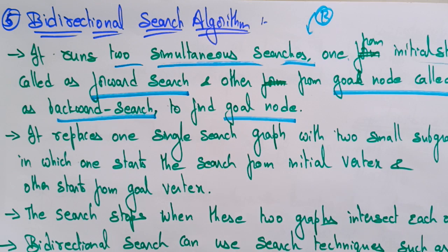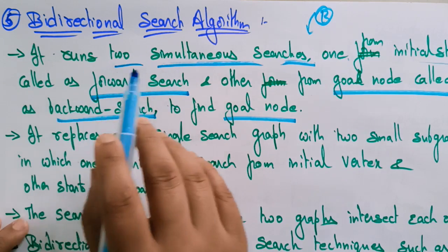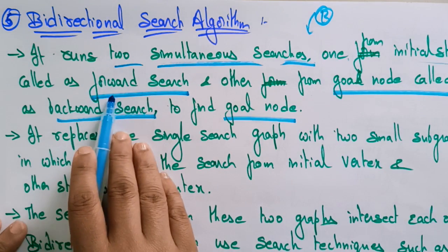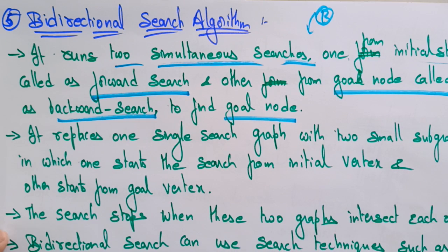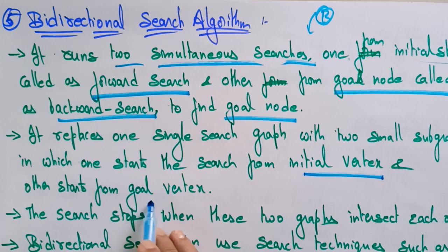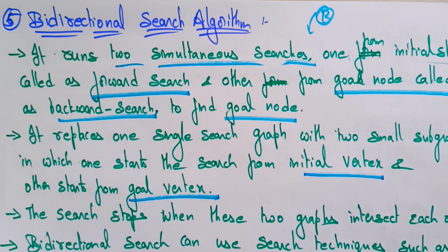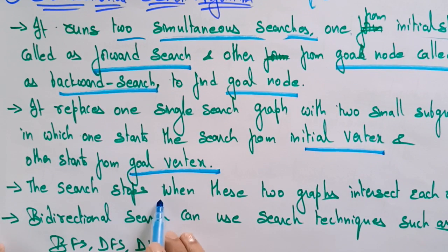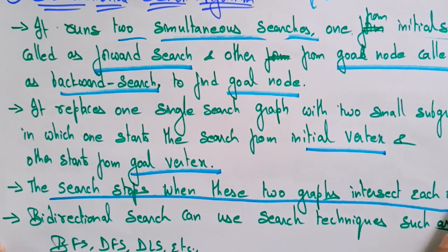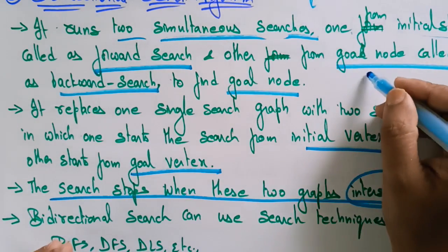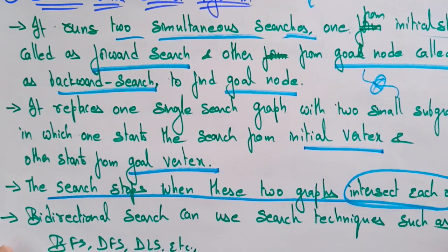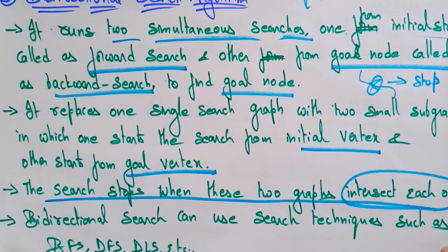The bidirectional search runs two simultaneous searches — one from the initial state (forward search) and one from the goal node (backward search). It replaces one single search graph with two small subgraphs: one starts the search from the initial vertex and another starts from the goal vertex. The search stops when these two subgraphs intersect each other — when the forward and backward searches meet at one point.